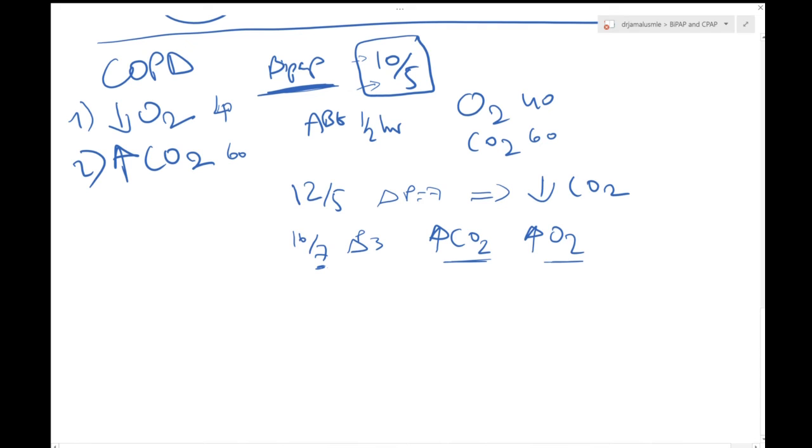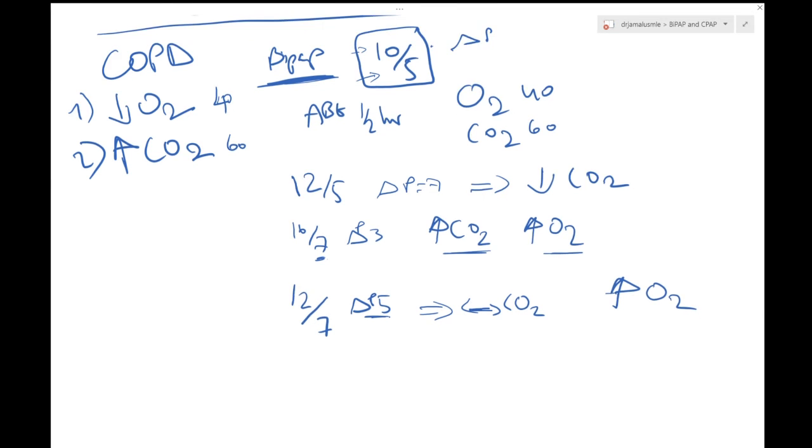And then you can say, how about I do 12 over 7? The delta pressure is 5. If you compare the delta pressure 5 to the delta pressure we have before, it hasn't changed. So basically your CO2 will still stay the same because delta pressure is the same. The only thing you would help him is oxygenation will improve.